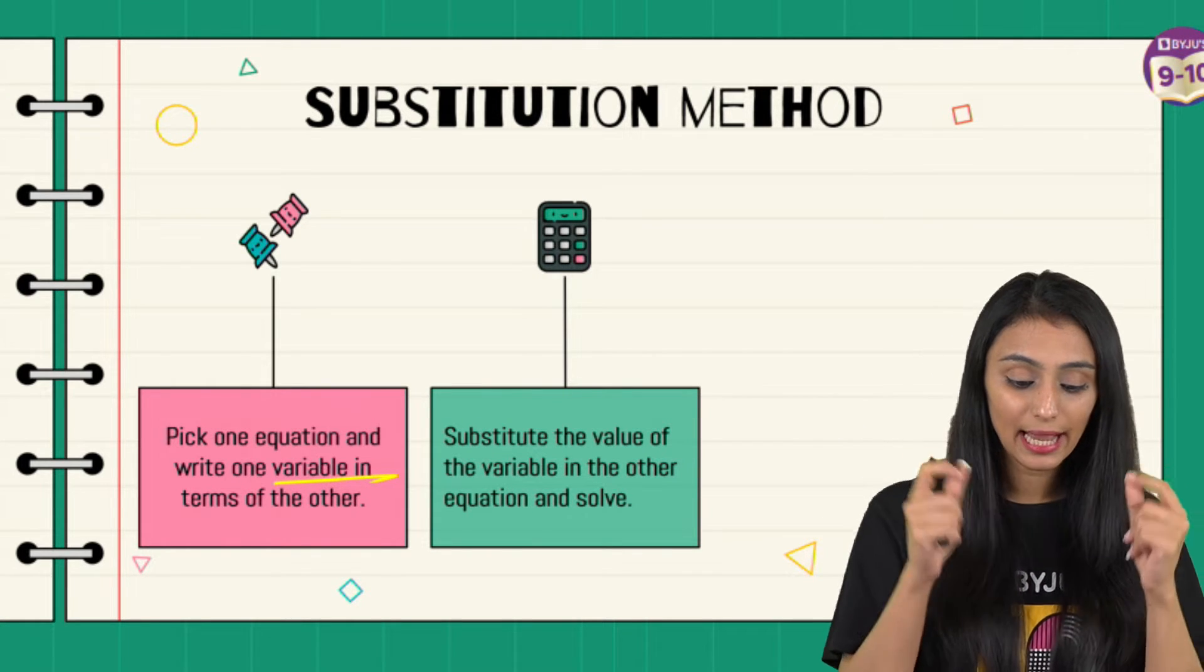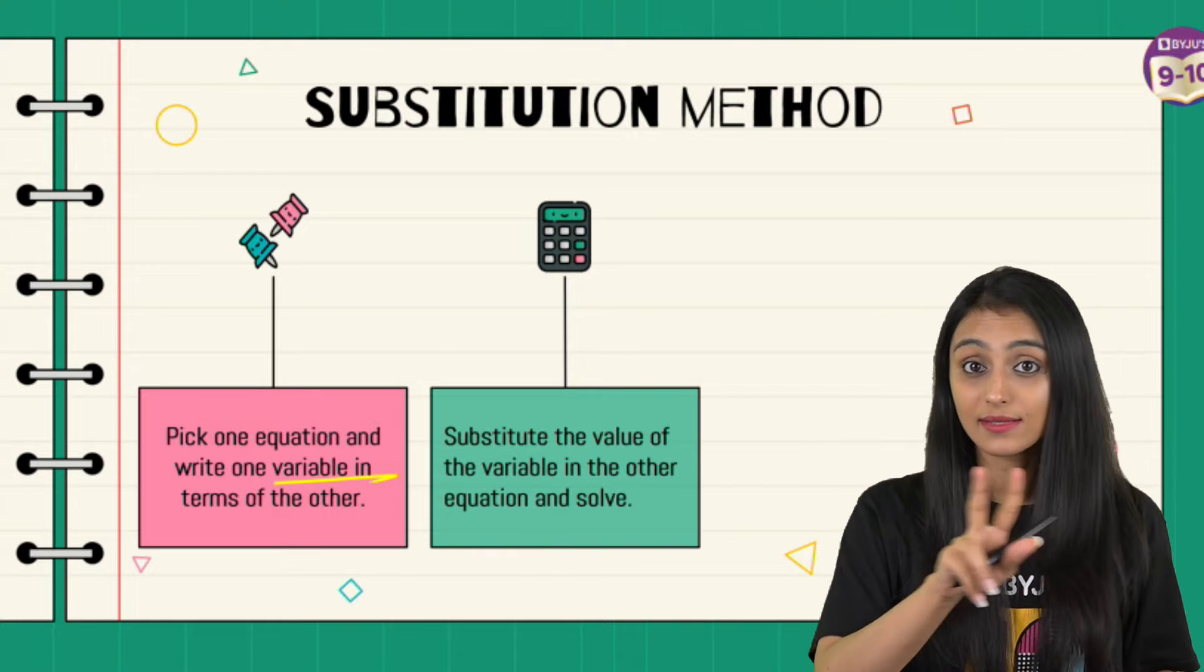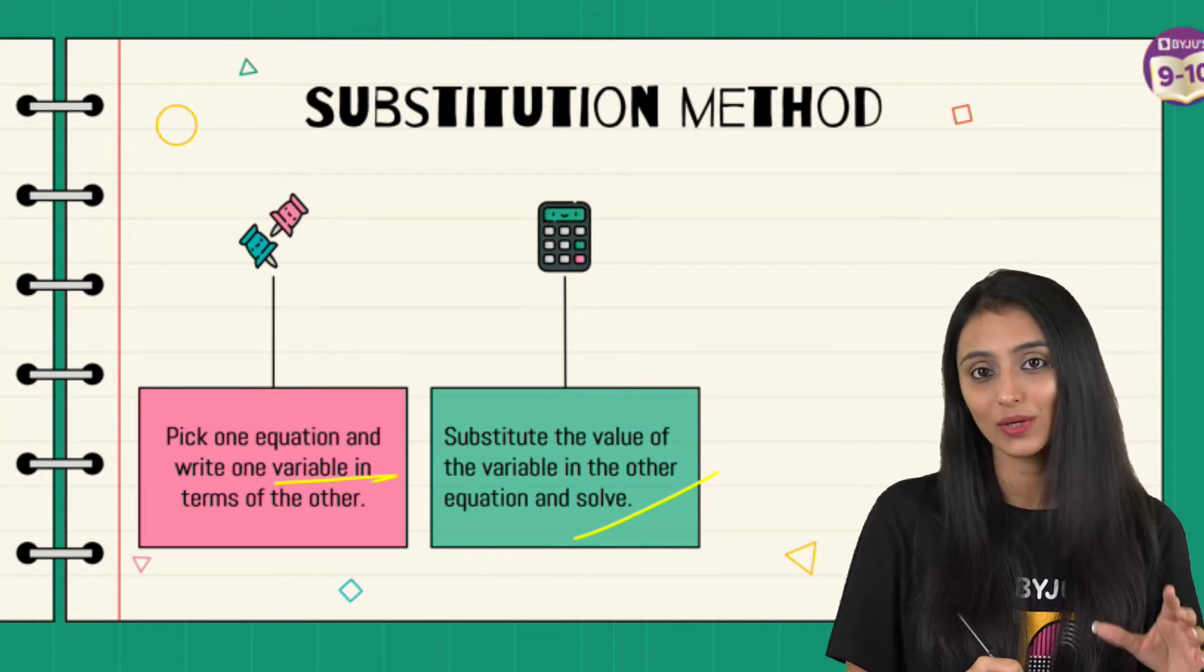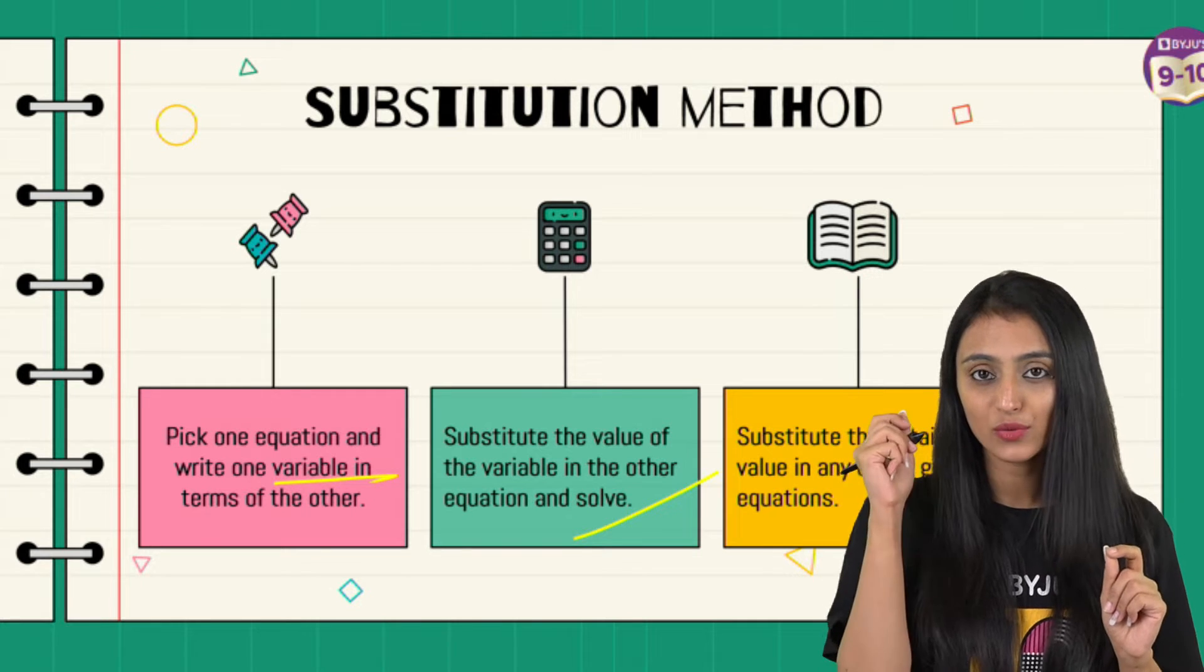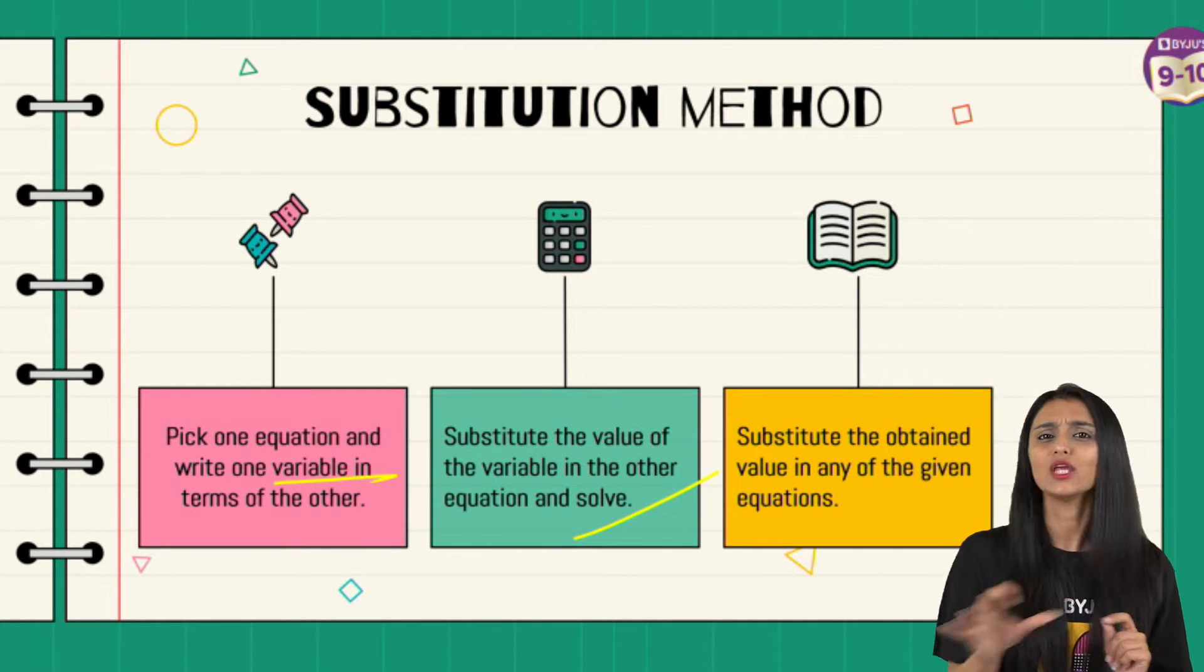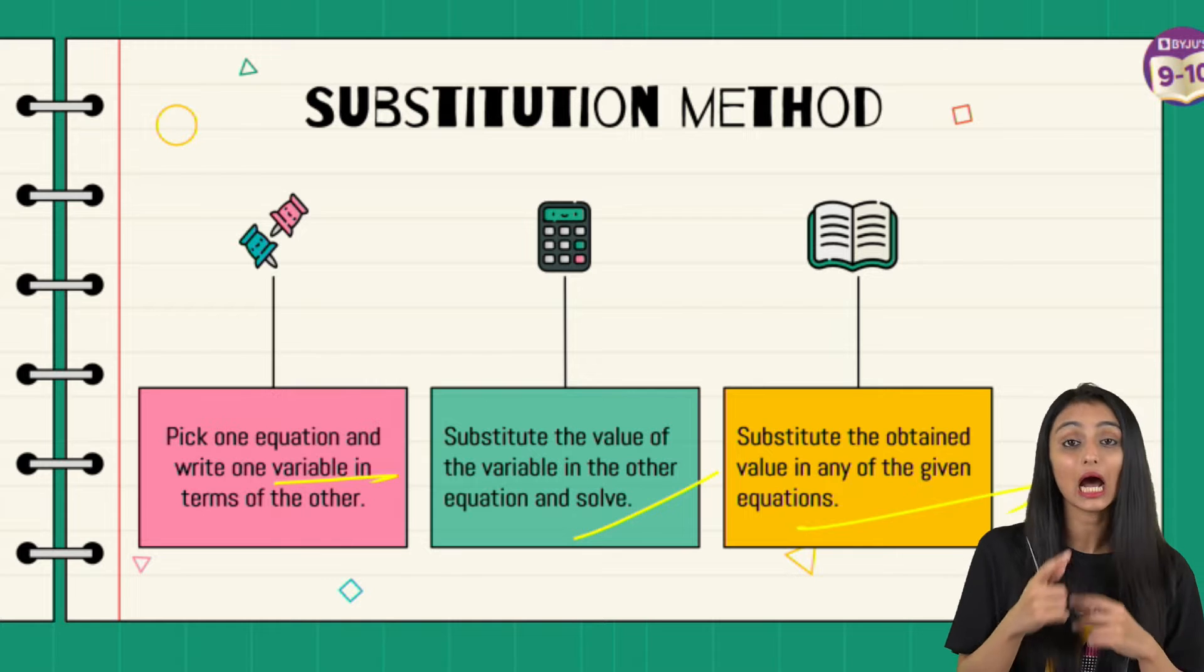Then you have to substitute the value of that variable in the other equation, not in the same equation, and then simplify. From there you would get the value of that variable. Once you get the value of one variable, substitute that value in any of the equations and you will get the value of the other variable. So this is the method.